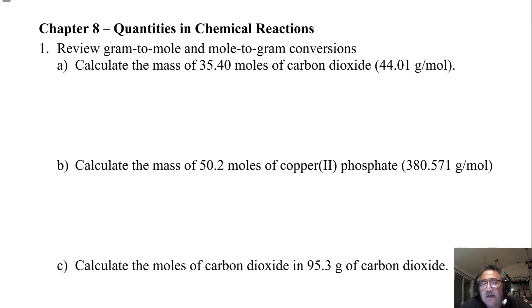Chapter 8 is about converting between different chemical quantities. It asks the question, how much of something can I make? Or if I want to make something, how much of the other reactants do I need?